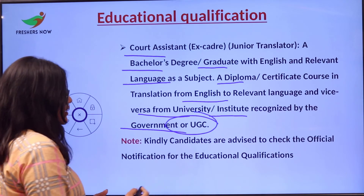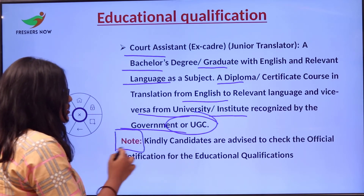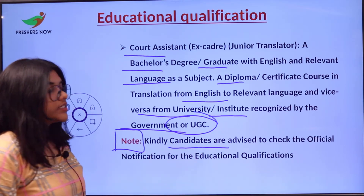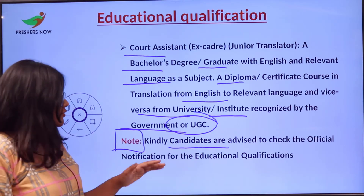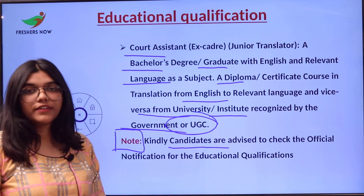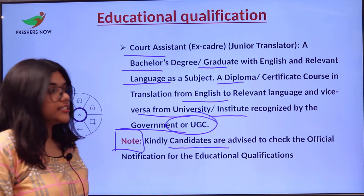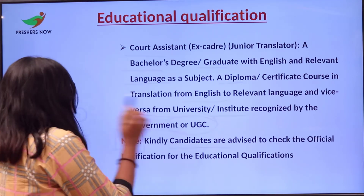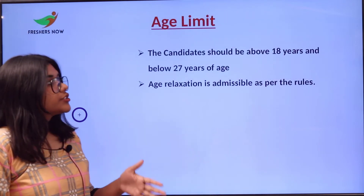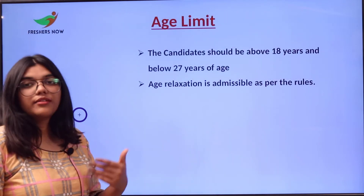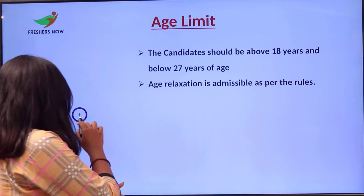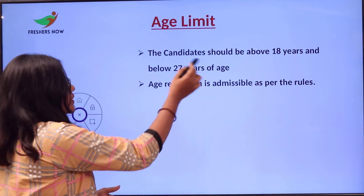The translation diploma or certificate must be from a university or institute recognized by the government or UGC. Candidates are advised to check the official notification for all education qualifications in detail. Moving on to the age limit: the candidate should be above 18 years of age and below 27 years of age. Age relaxation is admissible as per the rules.